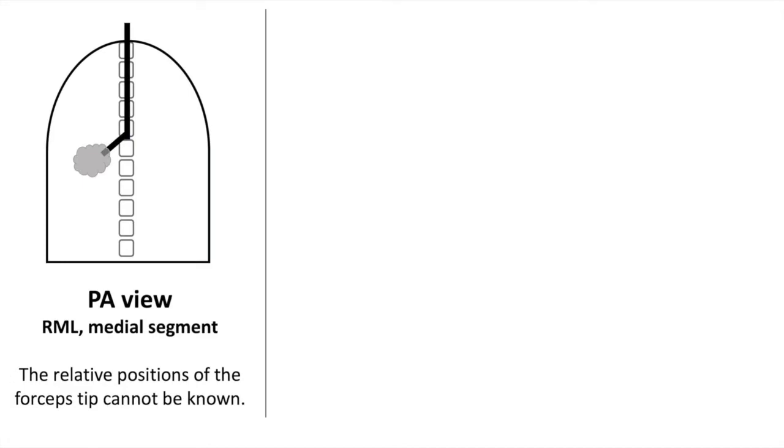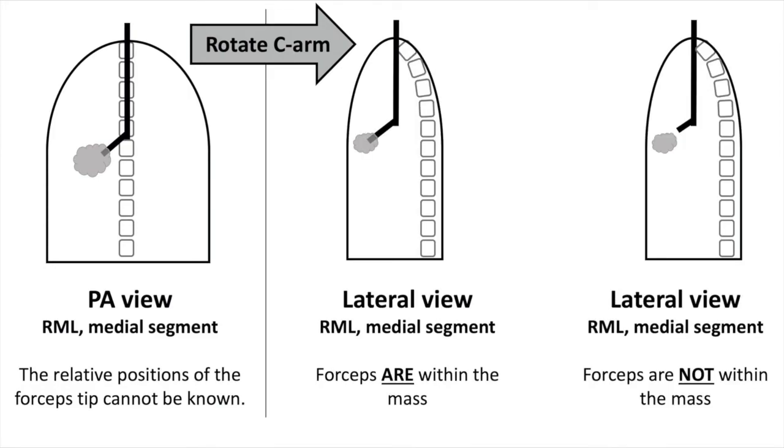If you are taking transbronchial biopsies from a mass, rotating the C-arm to take images in more than one direction may allow you to confirm that the forceps really are in the mass.